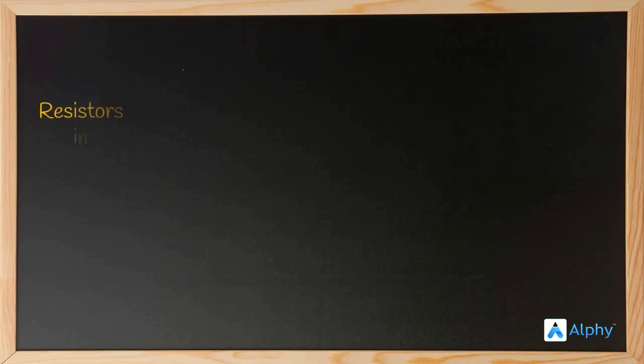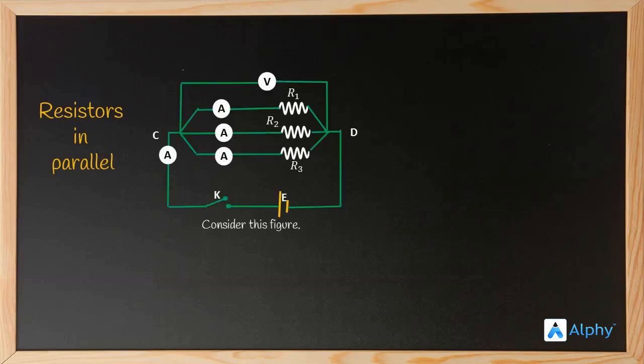Parallel connection of resistors in parallel. Parallel means that two points are connected to the resistors. In this figure, there are two points C and D, and at these points the resistors R1, R2, and R3 are connected. We call this a parallel connection.